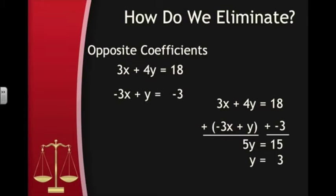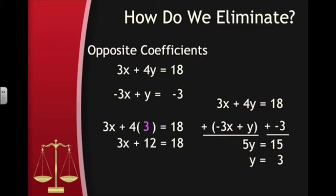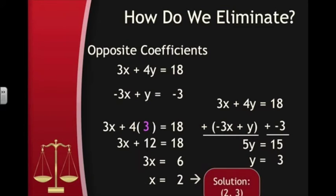We can substitute it into either equation, so I'll just use the first one to get 3x plus 4 times 3 equals 18. This gives us 3x plus 12 equals 18, so we can subtract 12 from both sides to get 3x equals 6, then divide both sides by 3 to get x equals 2. Now we have our final answer. The solution is the point (2, 3).